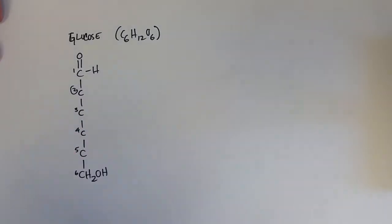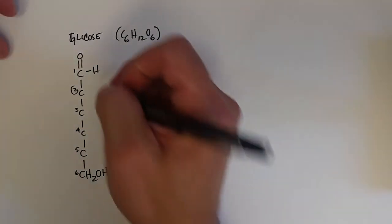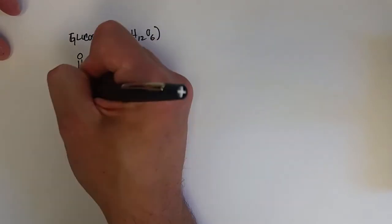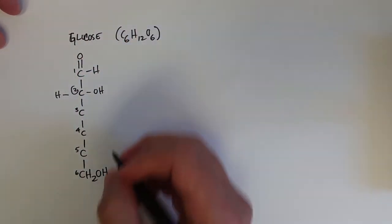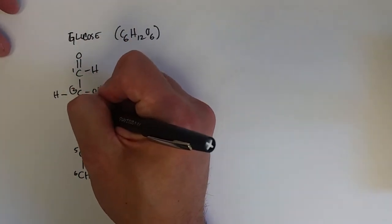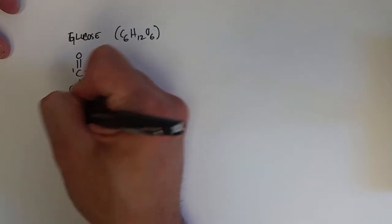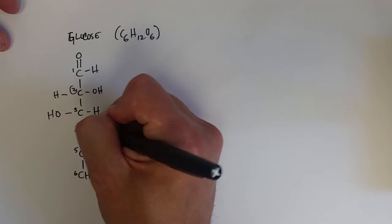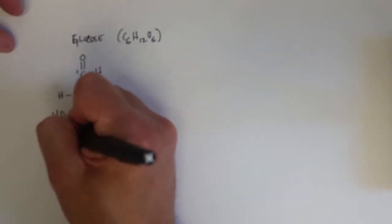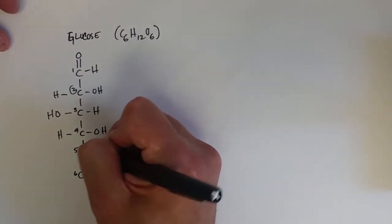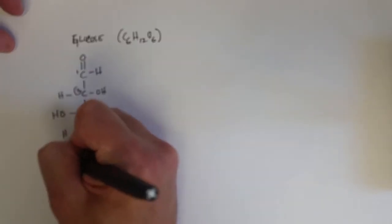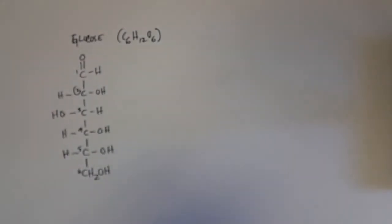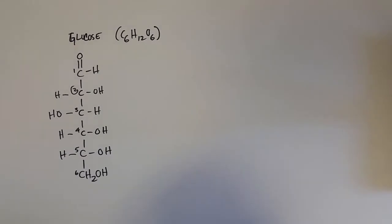...fifth, and sixth. The hydroxyl groups, how we put them, are very important because each carbon is potentially chiral. When we draw it like this, we are actually drawing what...